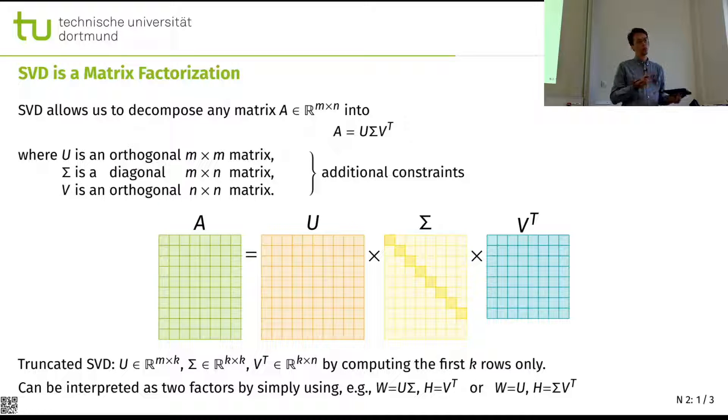Do we need topics to be orthogonal? No, topics could probably overlap. So that is something that we might be willing to lose.